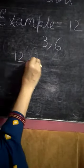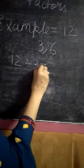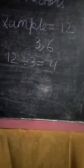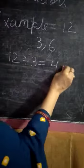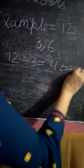12 divided by 3 equals 4. 4 is an exact number.